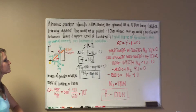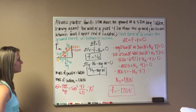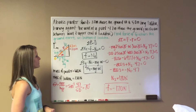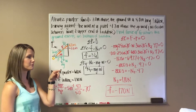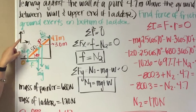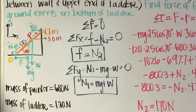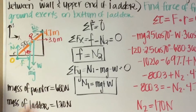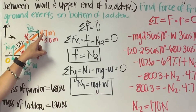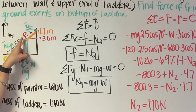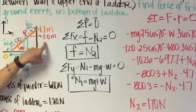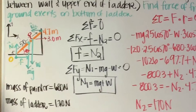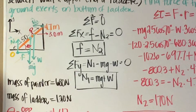We want to find the force of friction that the ground exerts on the bottom of the ladder. First we're going to draw our free body diagram. I have my x and y axis here. I have the wall, and the ladder is in orange — it's 4.7 meters above the ground. I have my painter in red, 3.0 meters above the ground, and the length of the ladder is 5 meters.